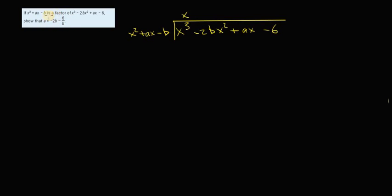The thing to notice is that if this is a factor, if x² + ax - b is a factor of x³ - 2bx² + ax - 6, it means this divides evenly. When we finish dividing using algebraic long division, what's left over will equal 0.